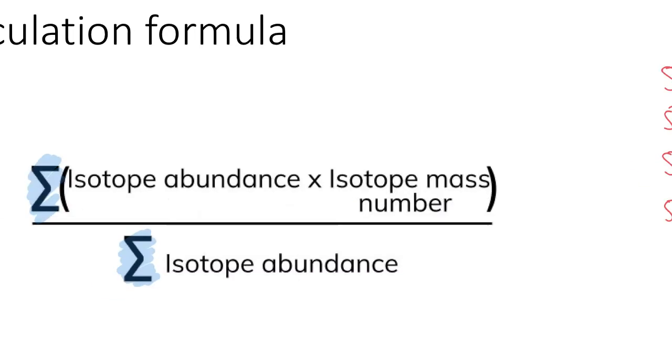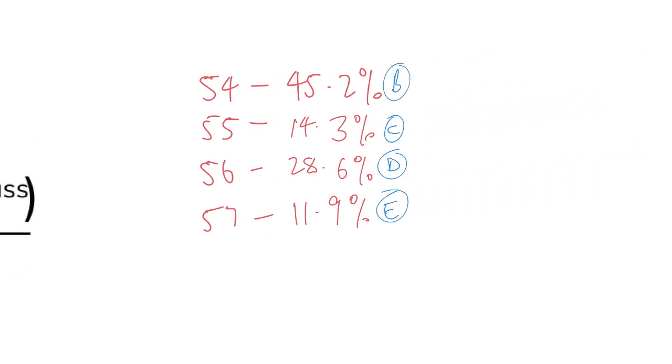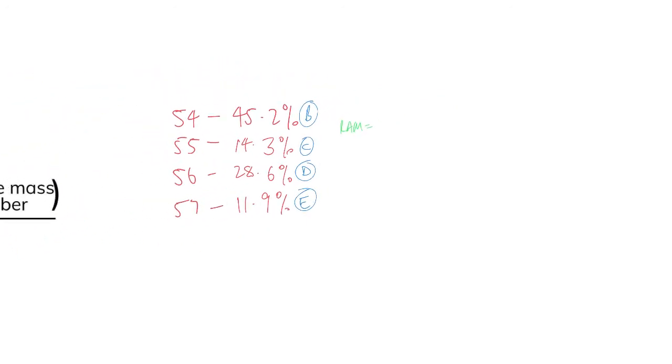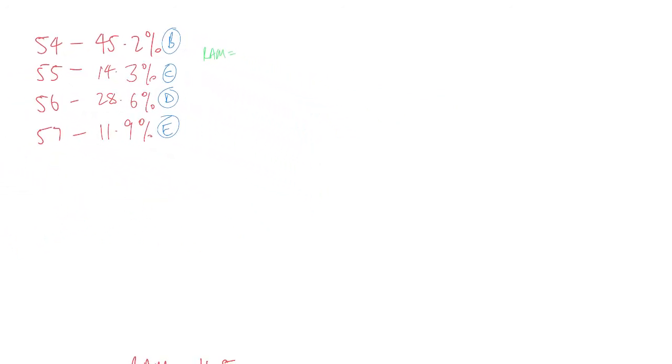So how do we do this calculation? It is isotope abundance times isotopic mass number. Now the mass number might actually not be what you're given. You might be given the mass number as well as the relative atomic mass in AMU as an accurate value, which will be close to that value but slightly off. So the RAM is equal to, let's just move that across to the side and make that a bit smaller. The RAM is equal to 45.2, which is B, times 54, and put that in brackets.